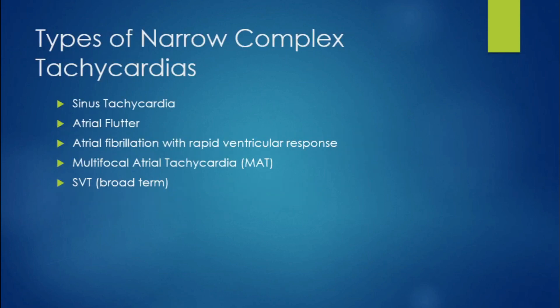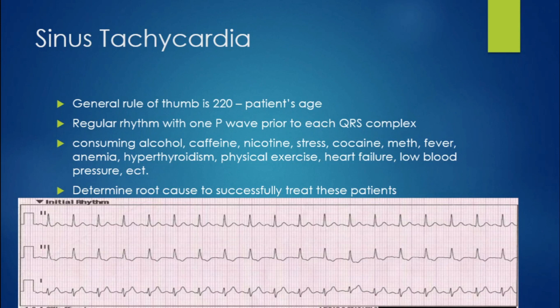Here's a list of some narrow complex tachycardias you should be familiar with. If you want to review the whole list, we made an ECG review guide for pretty much every rhythm you can imagine — that link is down in the description. So you have your sinus tach, atrial flutter, AFib with RVR, MAT — multifocal atrial tachycardia — and SVT. SVT is an umbrella term that encompasses a bunch of different rhythms, which we'll get into later.